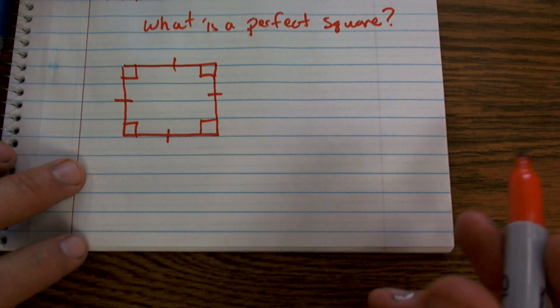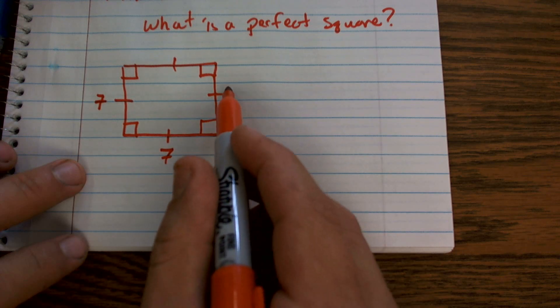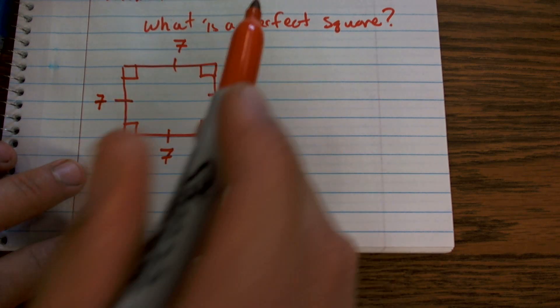So therefore, if I say that one length is seven, that means all the lengths are going to be seven, correct?